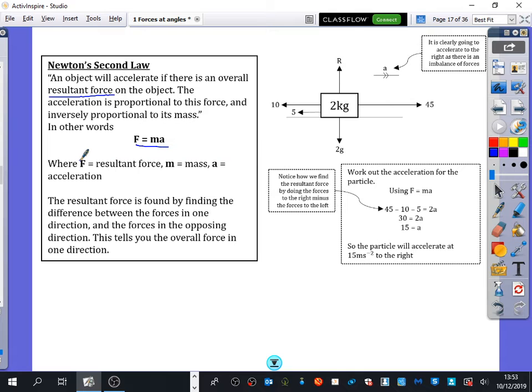It's kind of thinking about it a bit like a tug of war. So with this diagram that I've got up here, we've got this 2kg thing that is resting on a table. Obviously we've got its weight going downwards, we've got its normal reaction going upwards. We've got something pulling it to the right with 45 newtons. We've got two things pulling it to the left.